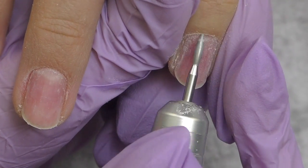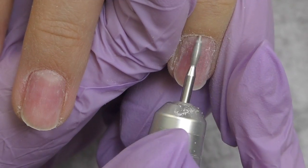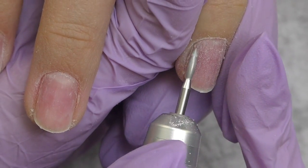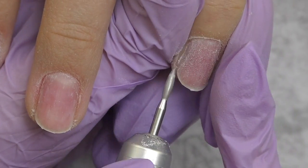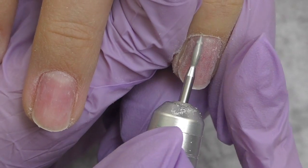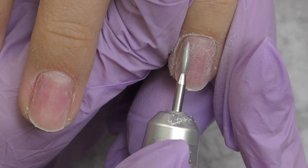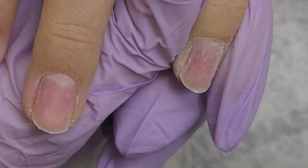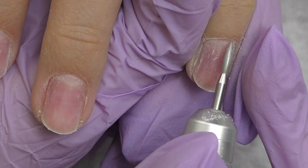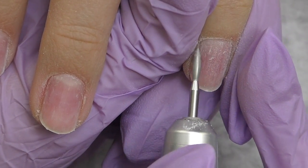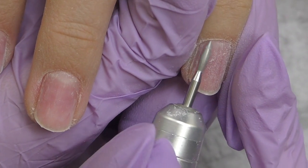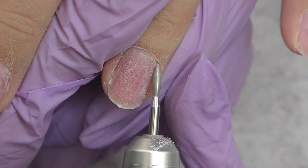But first, we're going to start with the prep. I pushed back the cuticles with an orange wood stick and then proceeded to dry manicure with a flame diamond bead. Dry manicure with electric nail file is my favorite way to prep the nails because it is fast. And also, it allows you to make cuticles look good and you will not need to worry about product lifting because you can do prep and manicure at the same time.